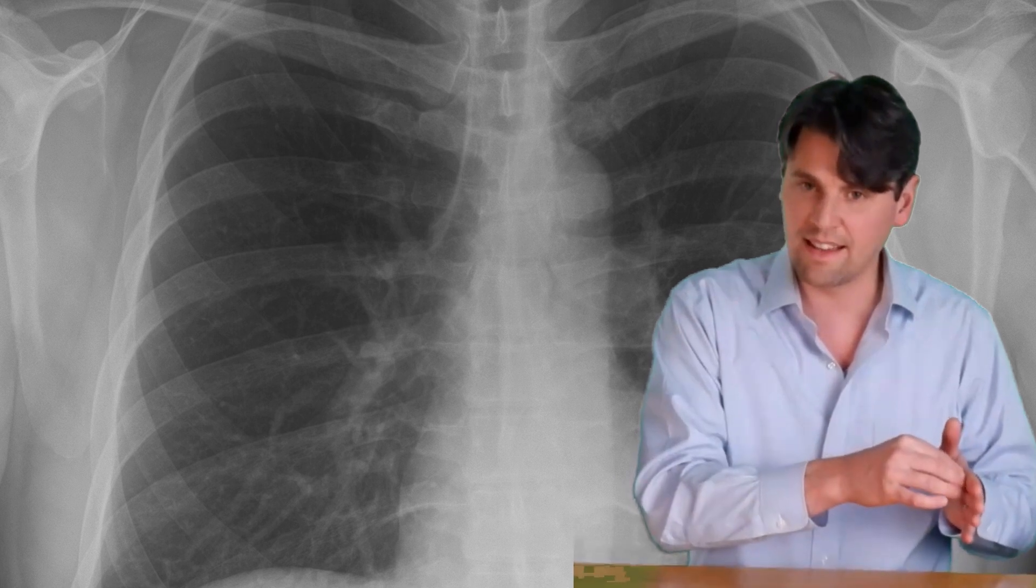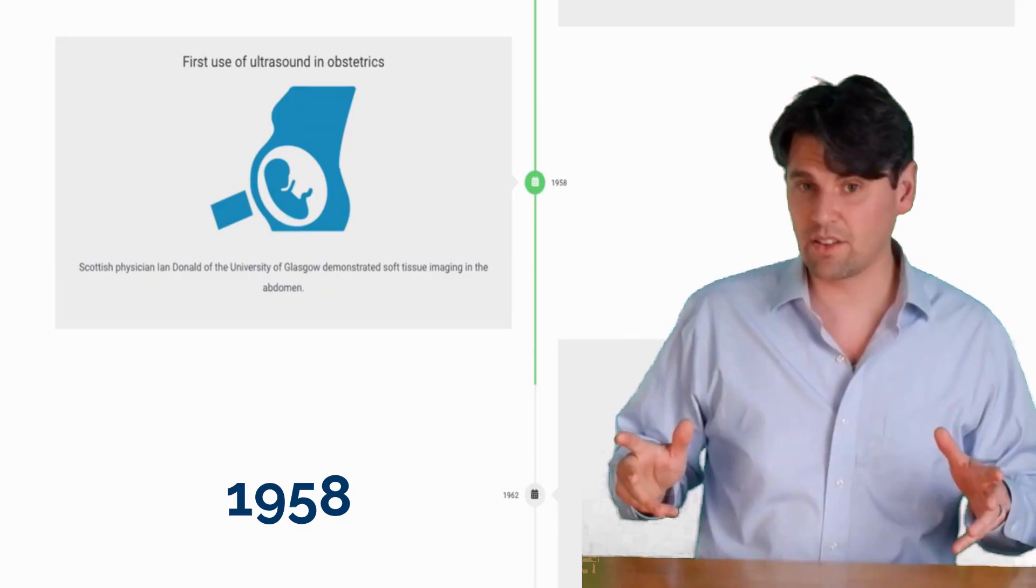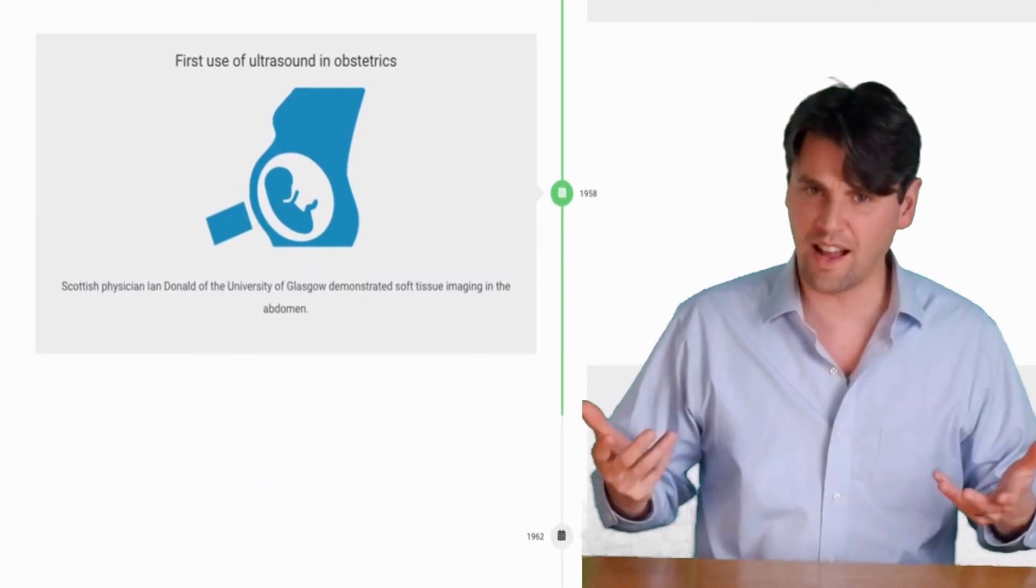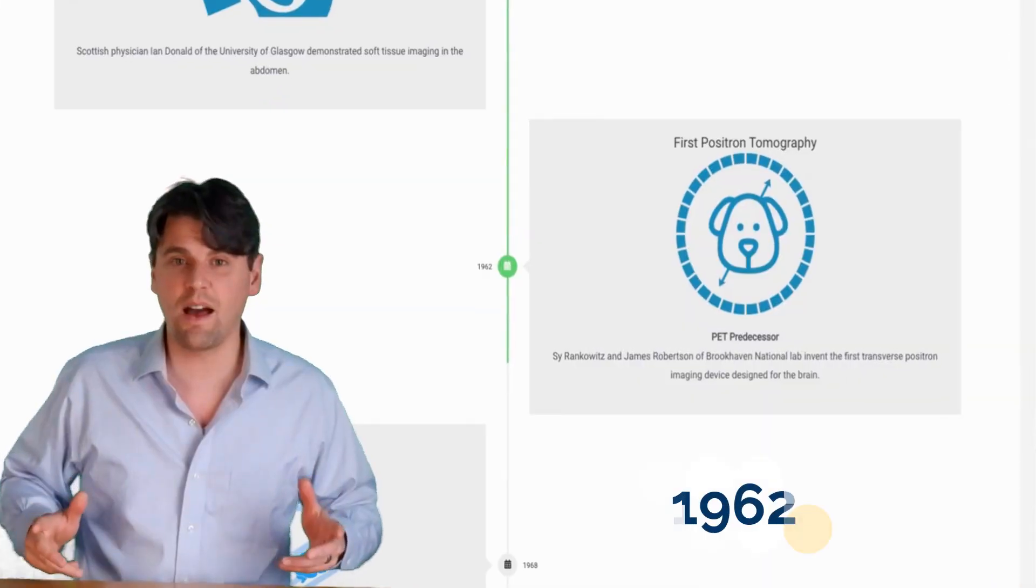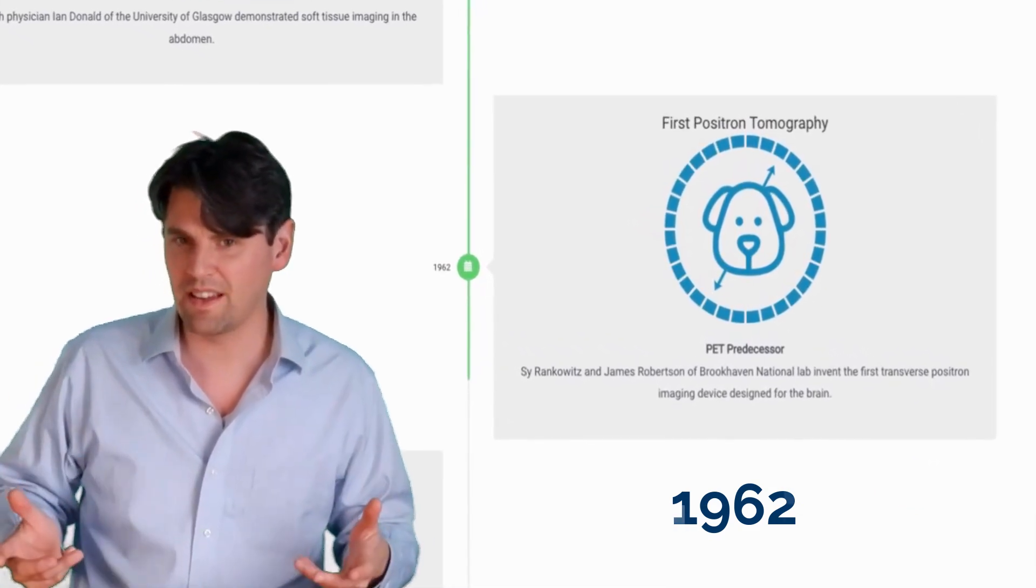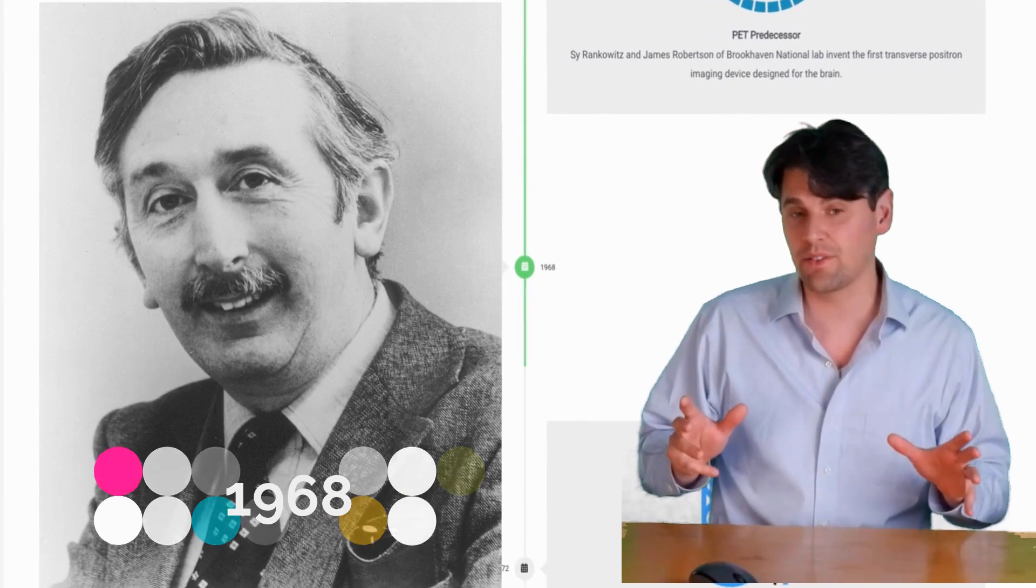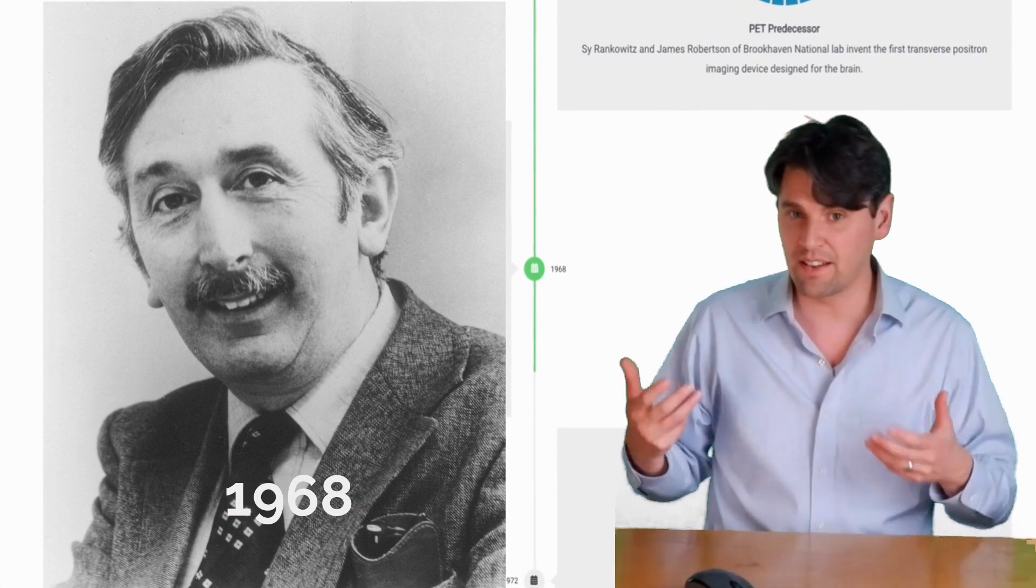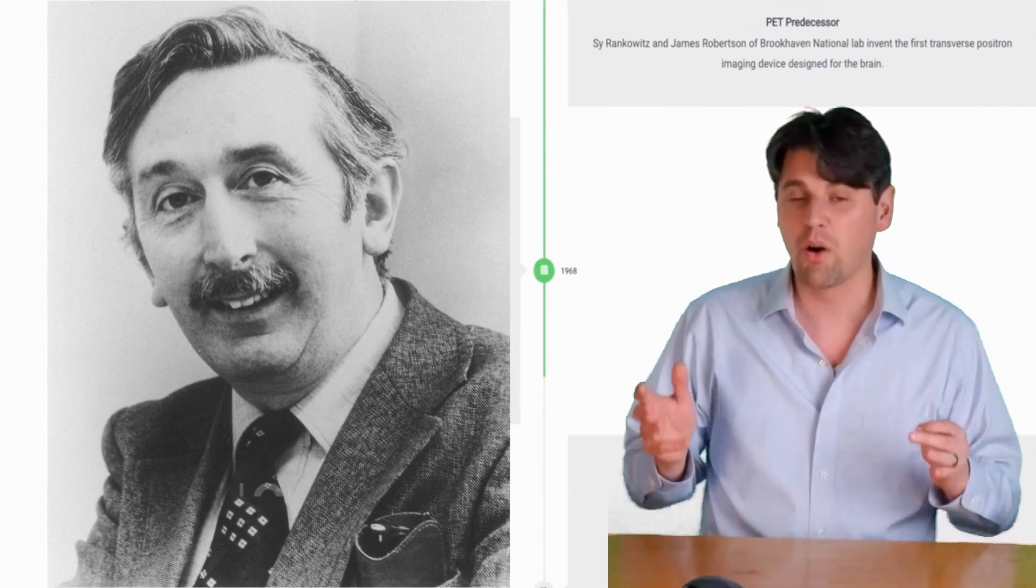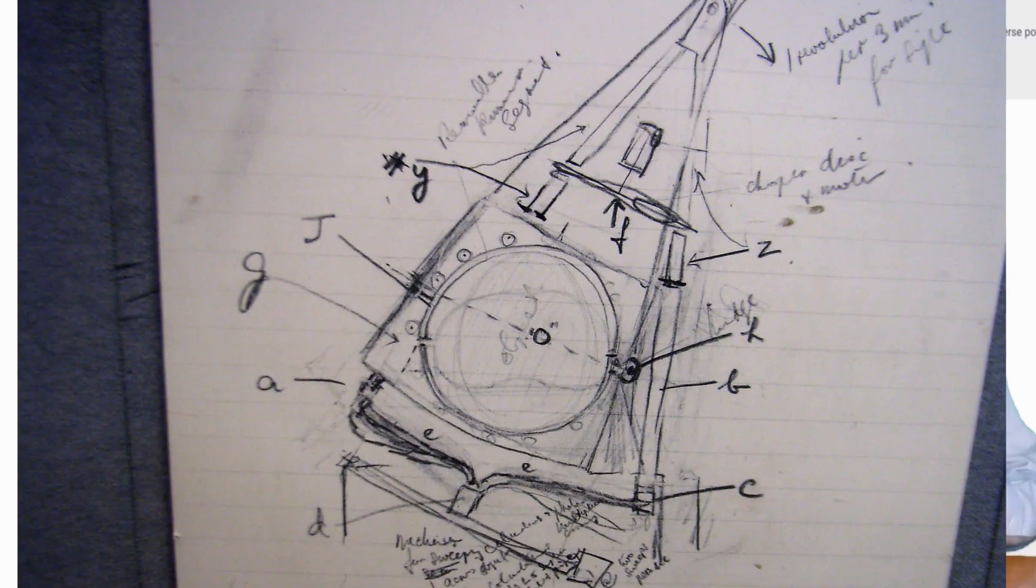Ian Donald of Glasgow was actually the first to use ultrasound in obstetrics. This tabletop PET system was actually built and demonstrated at the Brookhaven National Lab. 1968, Sir Godfrey Hounsfield actually invented the CT scanner while at EMI. He was in charge of putting this CT scanner together.